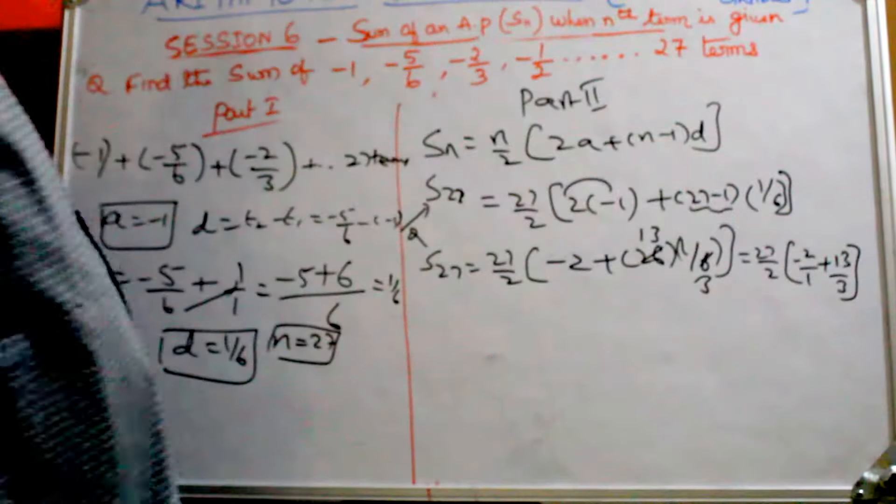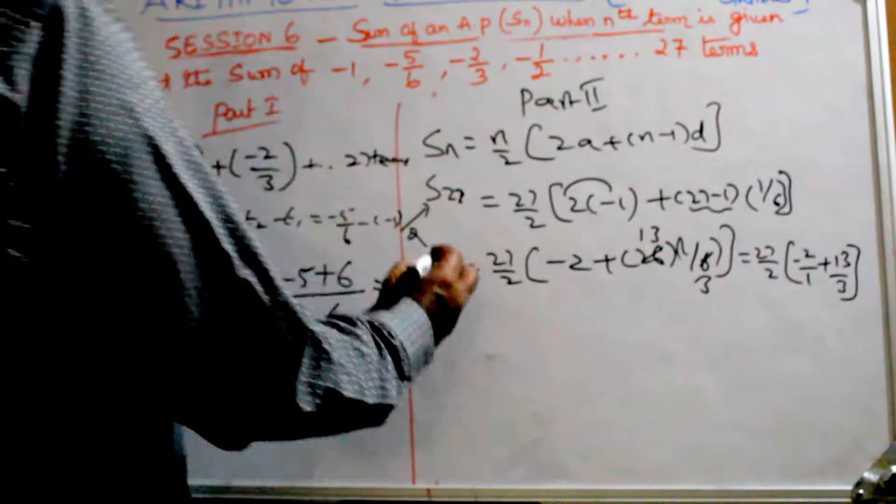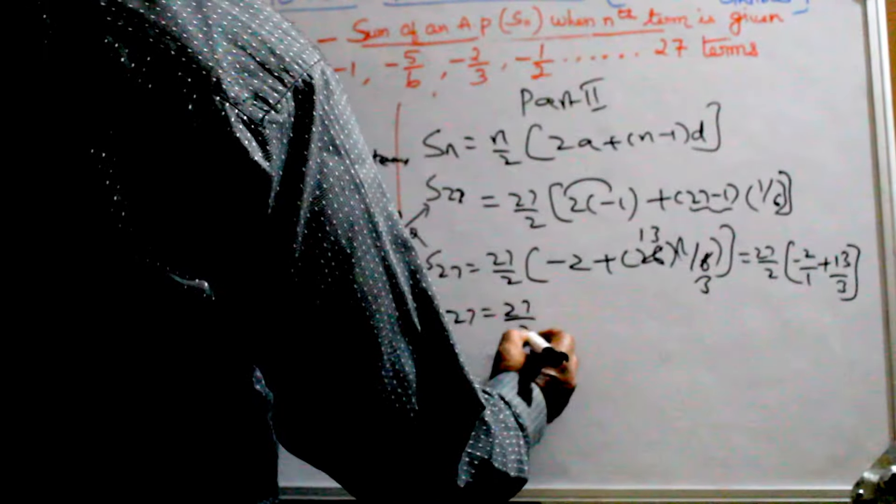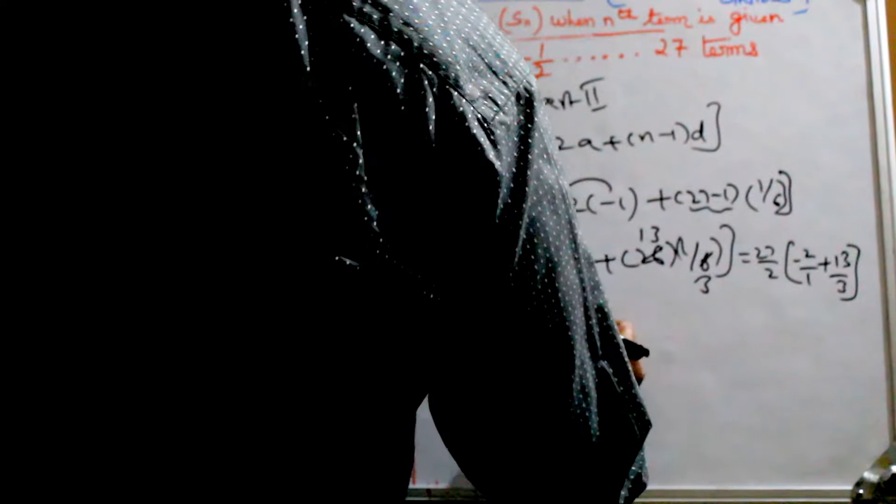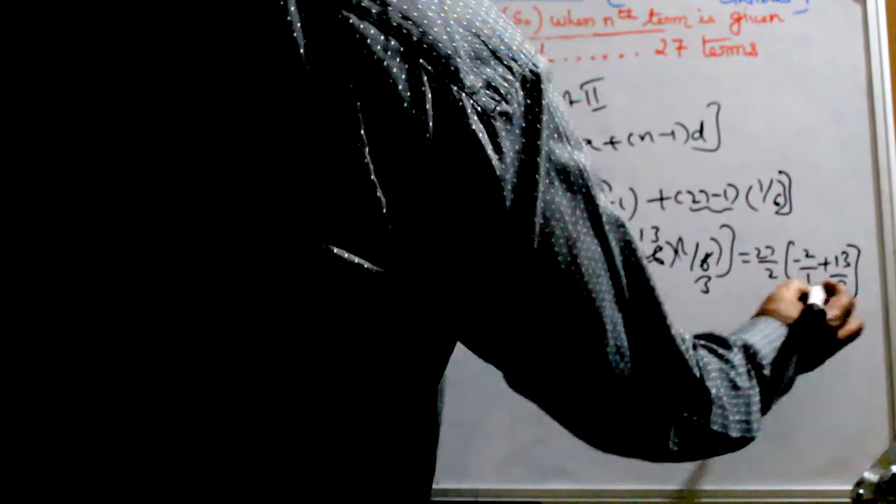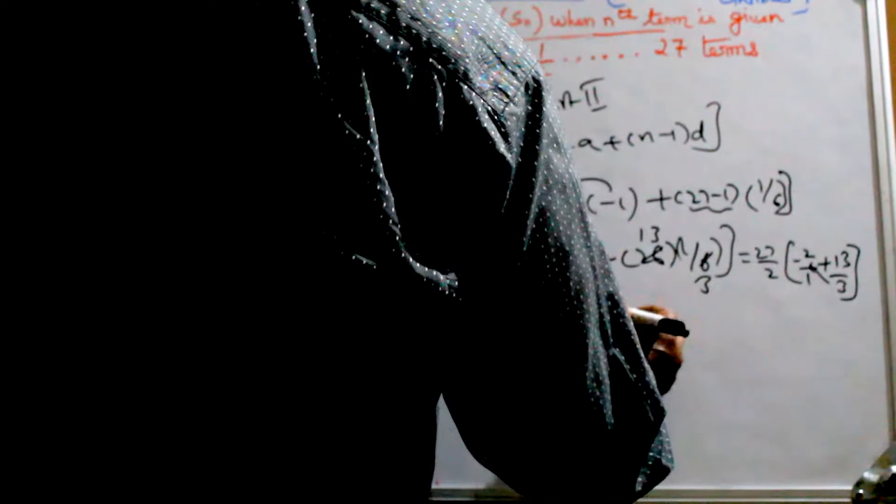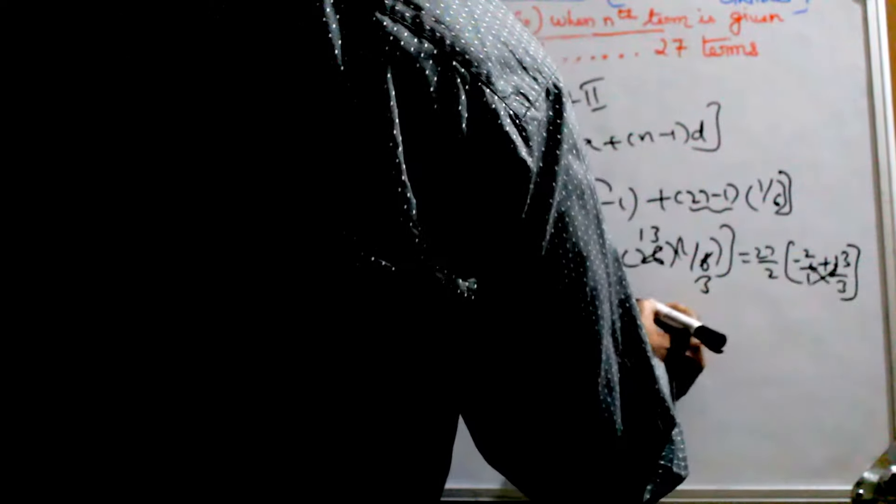You make it into fractions, you can add easily. So S27 equals 27/2 times... The LCM for these 2 is 3. I take 3, 3 goes there. So you get -6 plus 13.